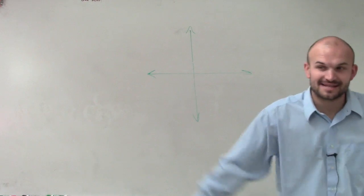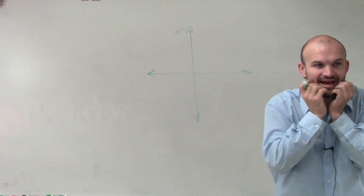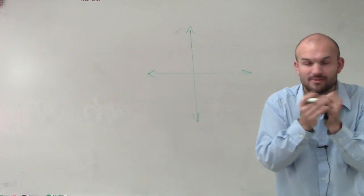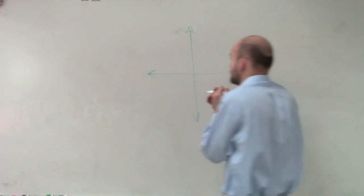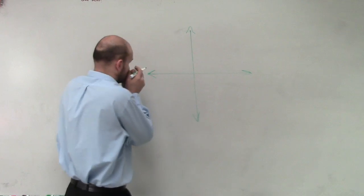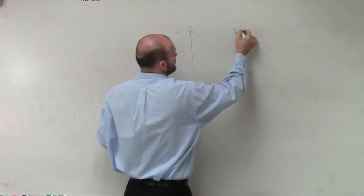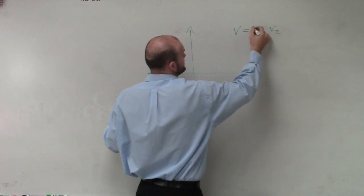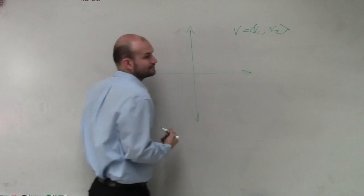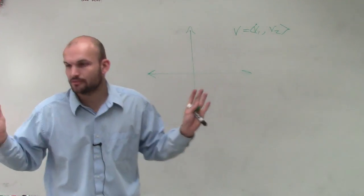So here's my favorite thing, last thing we need to go over. We're talking about vectors, and we're talking about component form of vectors. If we have the component form of vector, we know it's going to be V1 comma V2. That's your component form of vector.